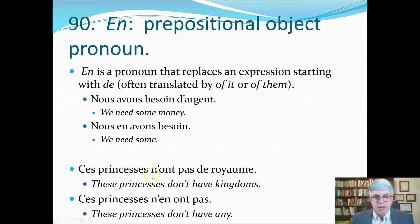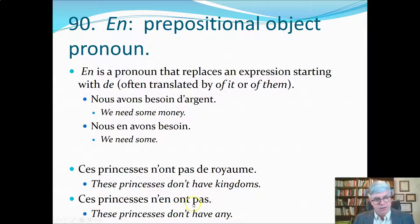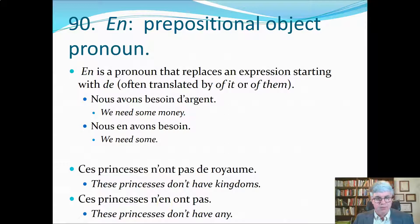'Ces princesses n'ont pas de royaume' — these princesses don't have kingdoms. Here 'de royaume' is the negative form of the indefinite article, so 'de royaume' gets replaced by 'en': 'ces princesses n'en ont pas' — these princesses don't have any.